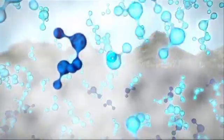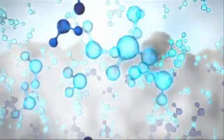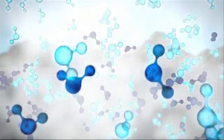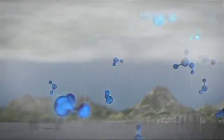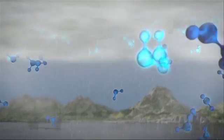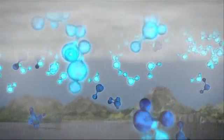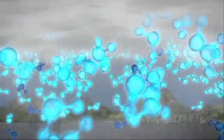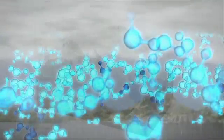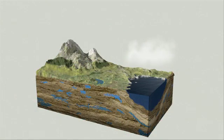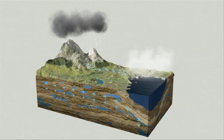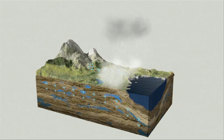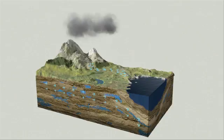When seawater evaporates, molecules with lighter isotopes rise faster, and when it rains, molecules with heavier isotopes fall down first. By measuring the differences in proportions between lighter and heavier isotopes — water's fingerprints — we can tell the exact history of water.